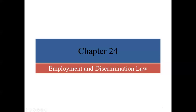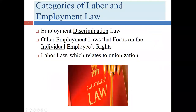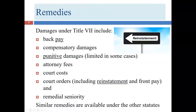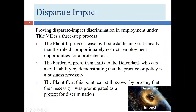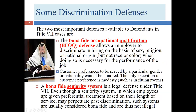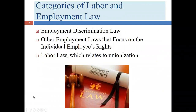Welcome to our third lecture on Chapter 24, which covers employment and discrimination law. In the first two lectures we discussed at-will employment, employment discrimination law — specifically Title 7 of the Civil Rights Act of 1964, the Americans with Disabilities Act, the Age Discrimination Employment Act, disparate treatment and disparate impact, sexual harassment, BFOQs, bona fide seniority systems, and the EEOC charge process.